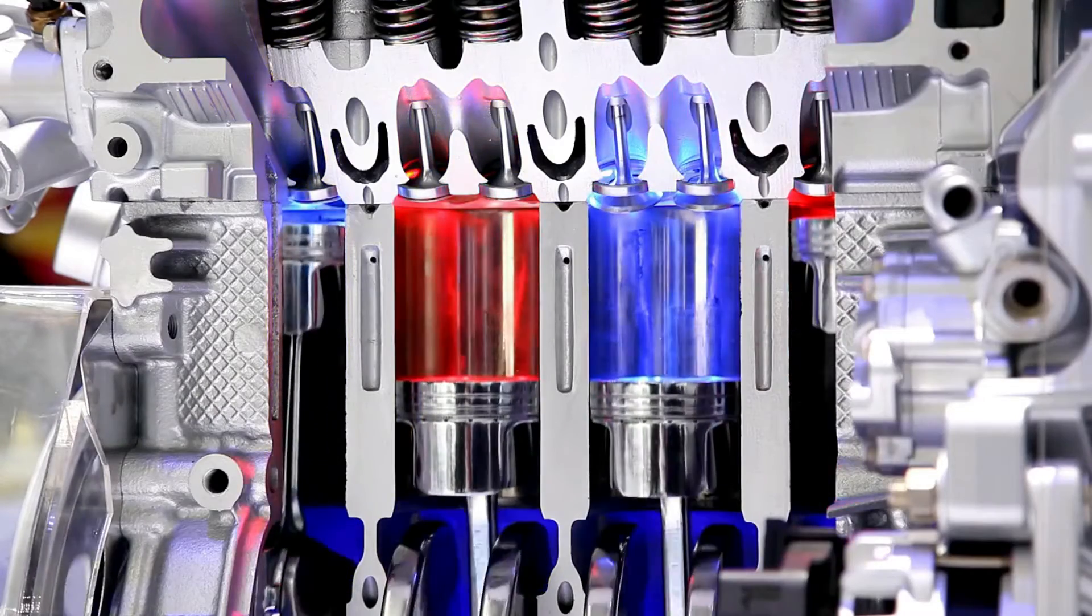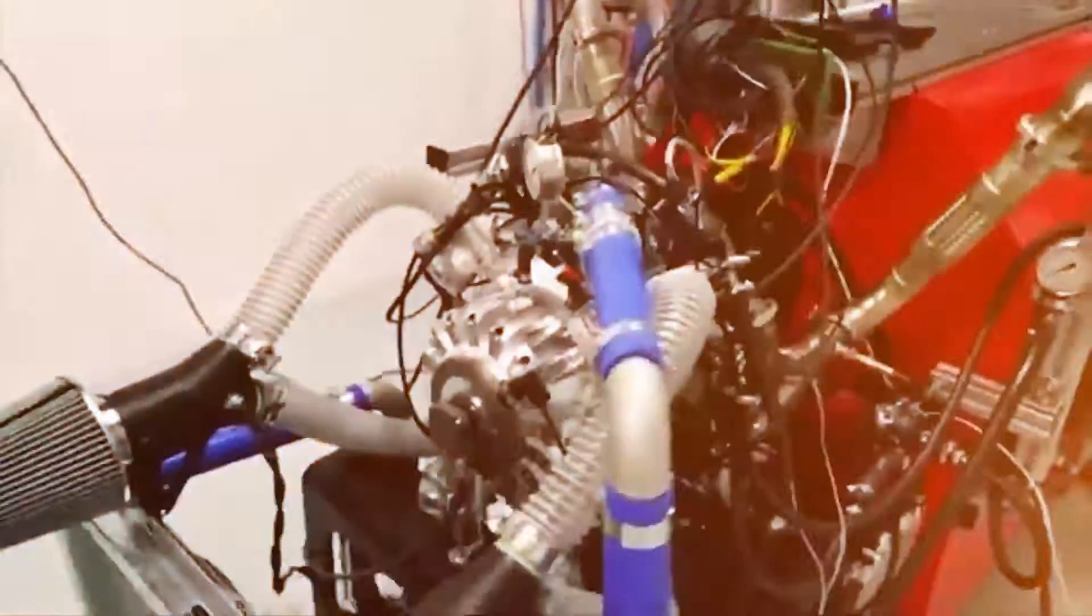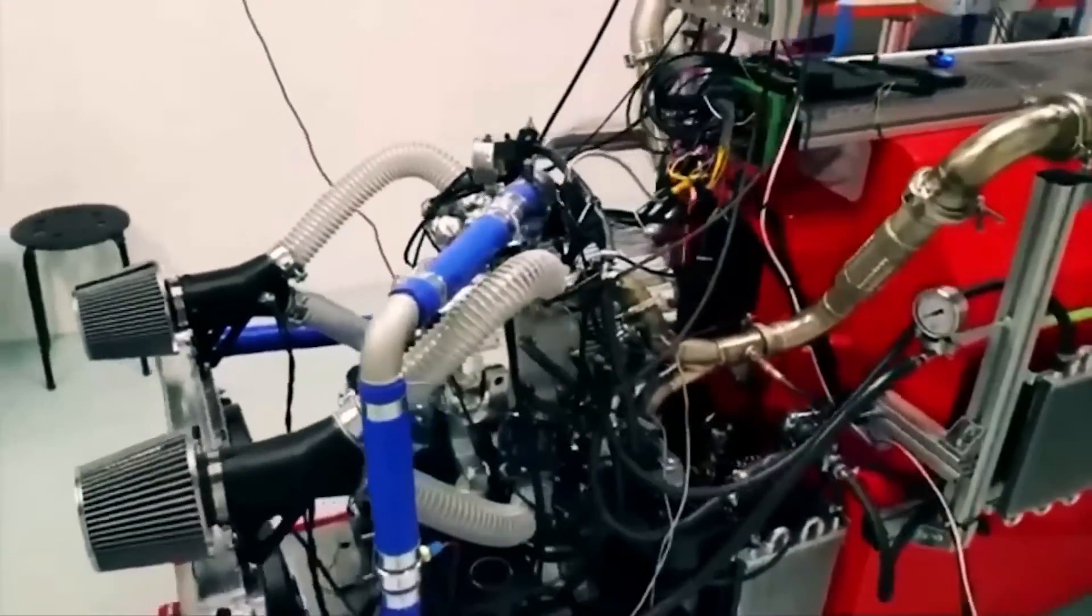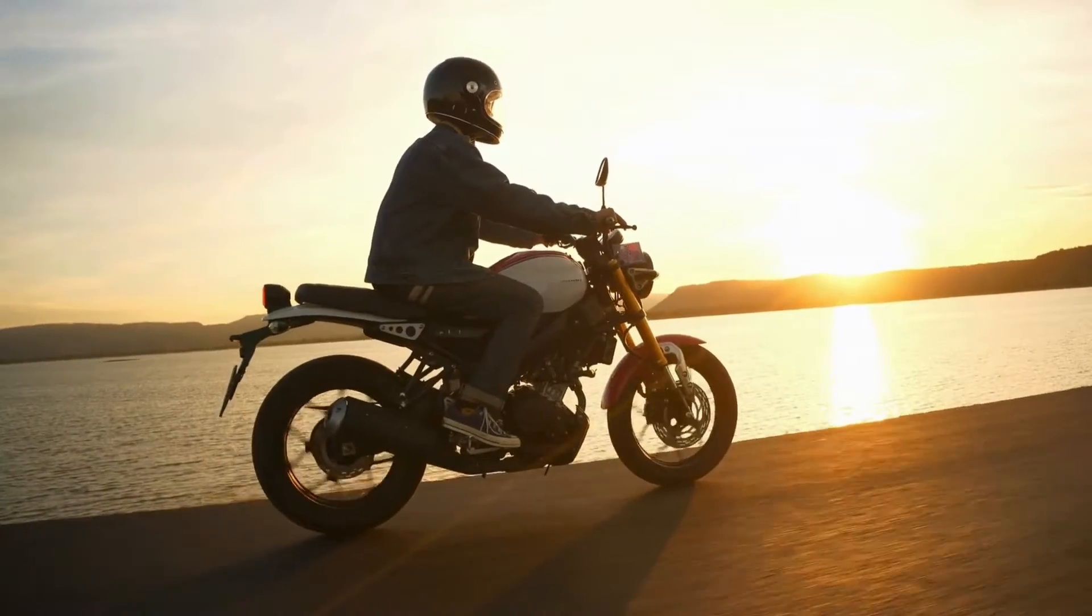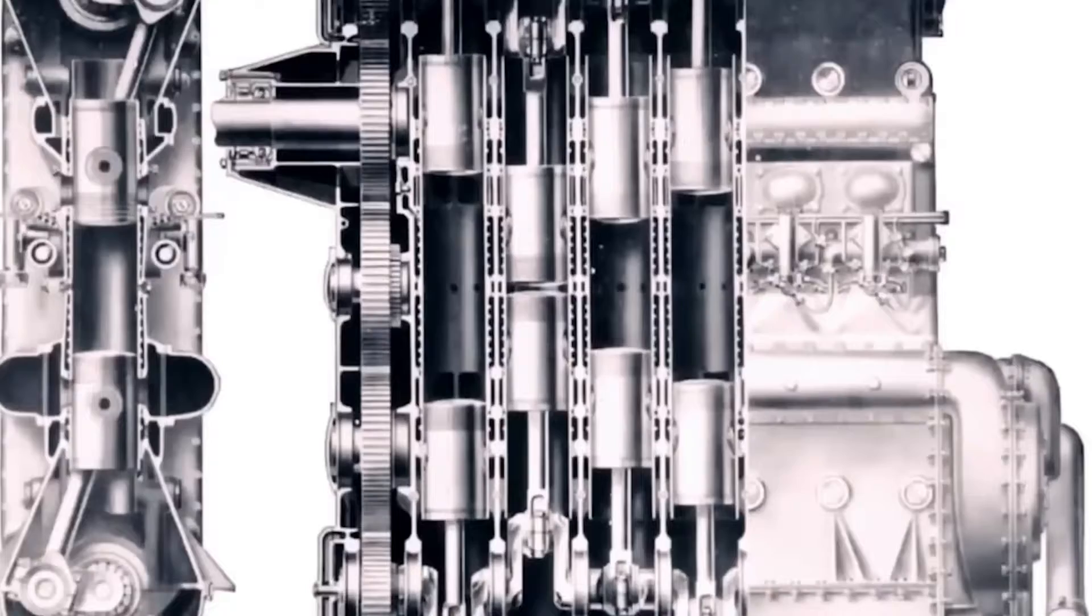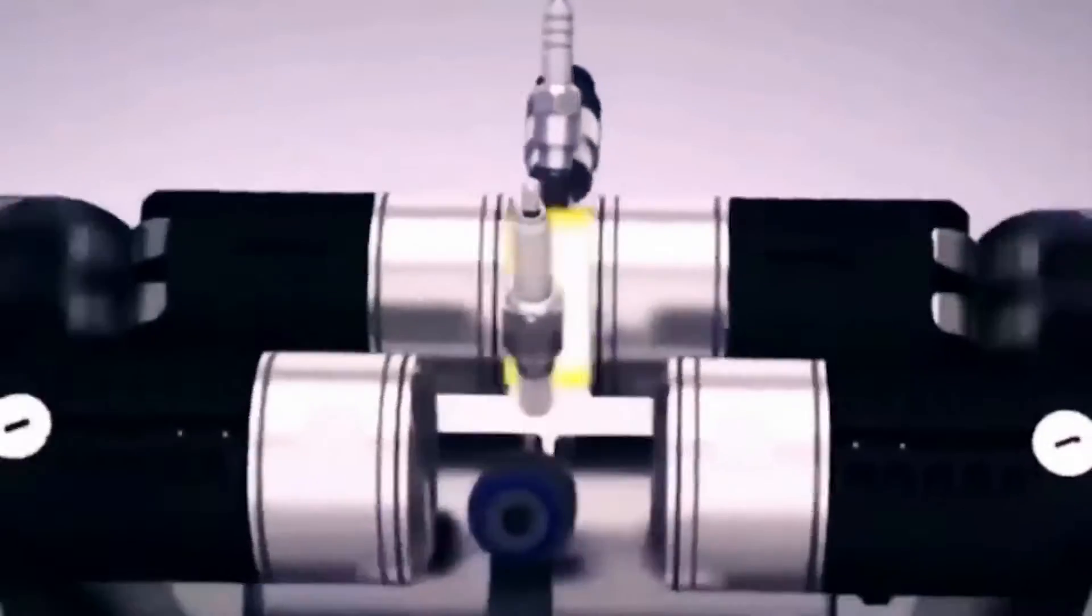That's still significantly different compared to a gasoline engine you'd typically find in a modern car. There are just two movements in the combustion process. But unlike a typical two-stroke engine, which is still in use in various motorcycles, the engine doesn't burn oil. Instead, combustion and lubrication are separated, just like in a typical four-stroke engine.